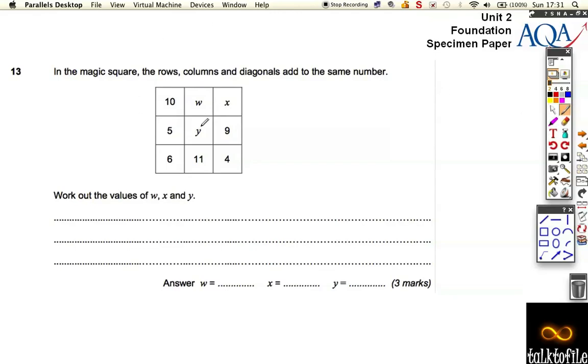Okay, question 13, getting towards the end of the paper, but hopefully we're still picking up some marks. Here it says, in a magic square, the rows, columns, and diagonals add to the same number.